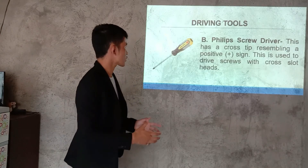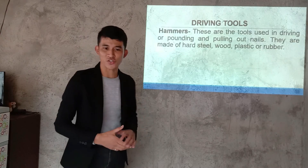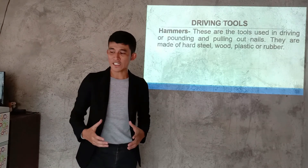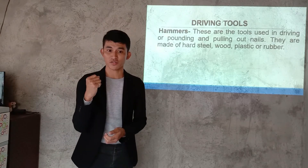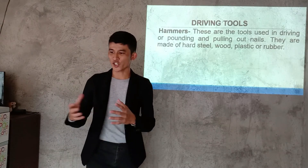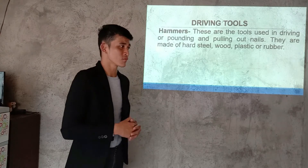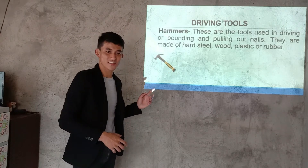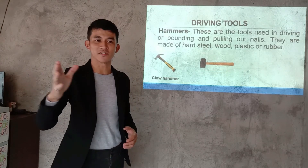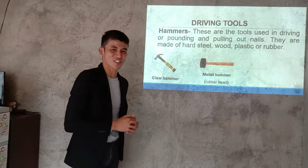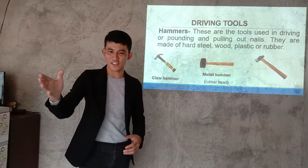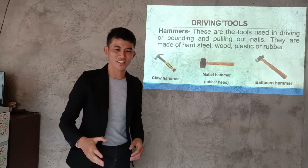Next we have hammers. Hammers are tools used in driving or pounding and pulling nails. They are made sometimes of steel, sometimes wood, and sometimes plastic or rubber. I have an example of a hammer here — what do you call that one, class? Very good, that is a claw hammer. And this one? Yes, correct — that is the mallet hammer. The third one — you're very familiar with this — yes, correct, that is the ball peen hammer.